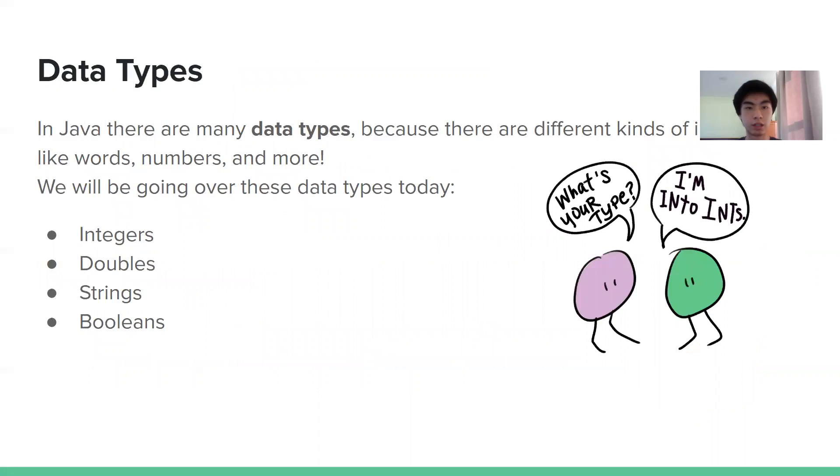So that's what data types are. They are different kinds of variables we can create. So we can create integers, doubles, strings, booleans. And now there are more data types than just those four, but we're only going to be covering those four.